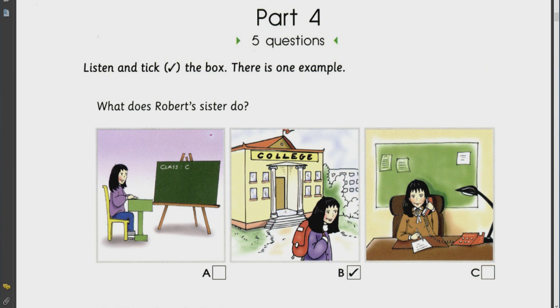The answer is picture B, right? Yes. Robert's sister goes to college. Repeat. Goes to college. Good. So, is she a pupil or a student? Student. Good. She's a student. Picture A. She goes to school. Repeat. She's going to school. Is she a student or a pupil? Pupil. She's a pupil. Great job. Picture C. She's a secretary. She works in an office. Great.